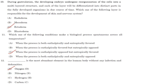During gastrulation, the developing embryo undergoes reorganization of cells into a multi-layered structure, and each layer differentiates into distinct parts in the fully developed organism. Which of the following layers is responsible for the development of skin and the nervous system? Out of endoderm, mesoderm, and ectoderm, it is the ectoderm. Answer is option C.